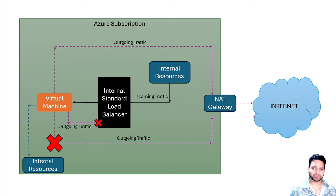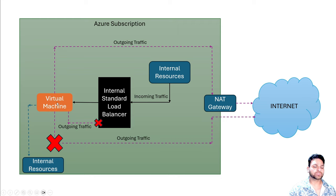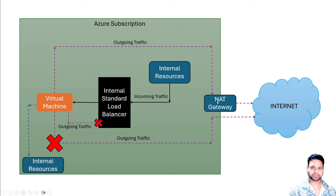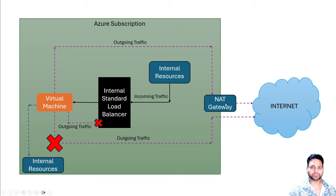If you don't have a firewall in place, that means traffic from the internet is not coming to the internal load balancer — only internal resources are connected. In that case, you can use the NAT gateway, which will be associated to the subnet where the virtual machine is located. The outgoing internet traffic will automatically be routed through the NAT gateway, which has its own public IP address. It performs network address translation, so all private addresses are translated to the public IP of the NAT gateway, and the internet will see all traffic as coming from the NAT gateway.